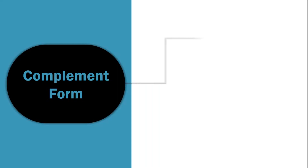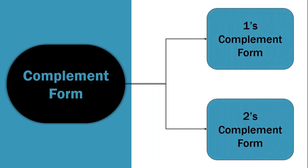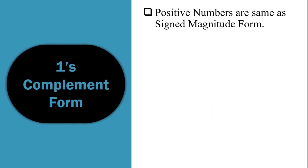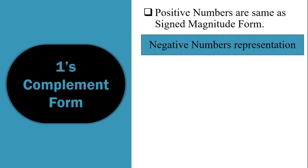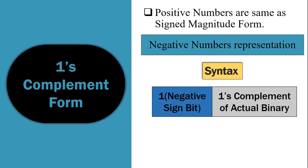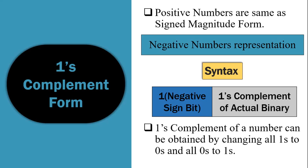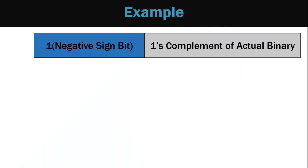Now we will learn about complement form. Signed binary numbers can be represented in 1's complement form as well as 2's complement form. In 1's complement form, if the number is positive the representation is the same as sign magnitude form, but if the number is negative the representation is different. The syntax is: sign bit which is 1, followed by the 1's complement of the actual binary number. The 1's complement of a number is obtained by changing all 1's to 0's and all 0's to 1's.